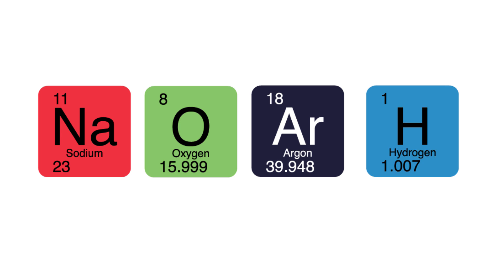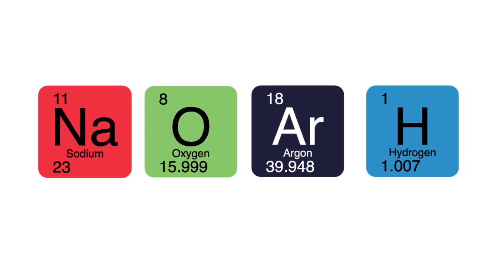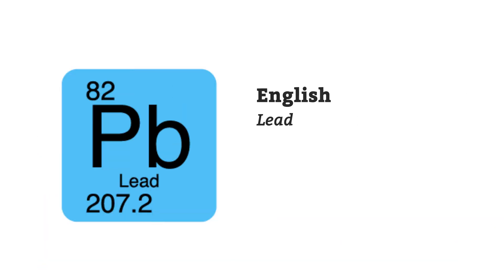Most of the elements have symbols that start with the same letter as their name. The exceptions are often symbolized by a name derived from another language, like Pb for lead. This is because in Latin, lead is known as plumbum.